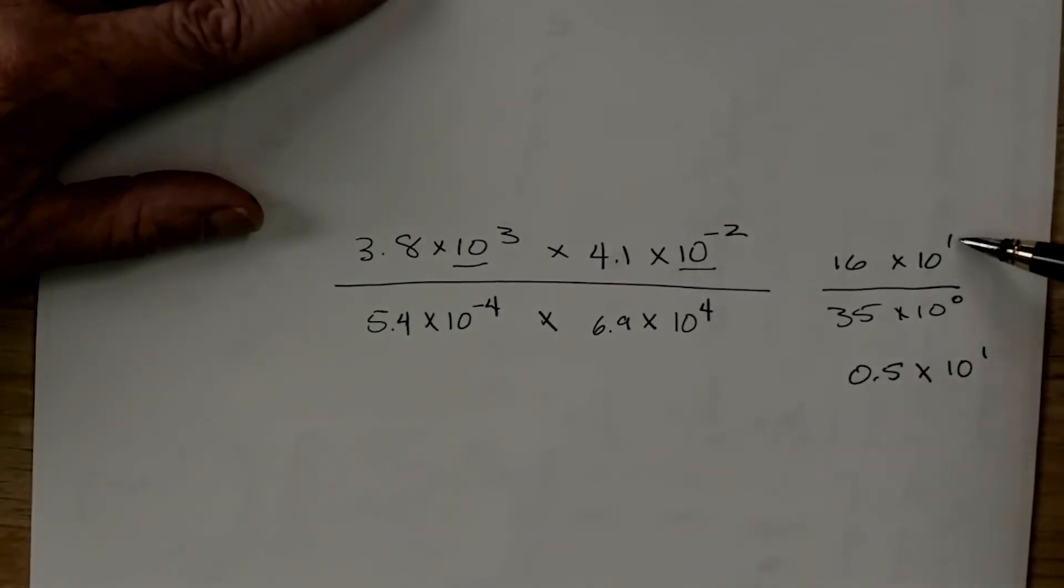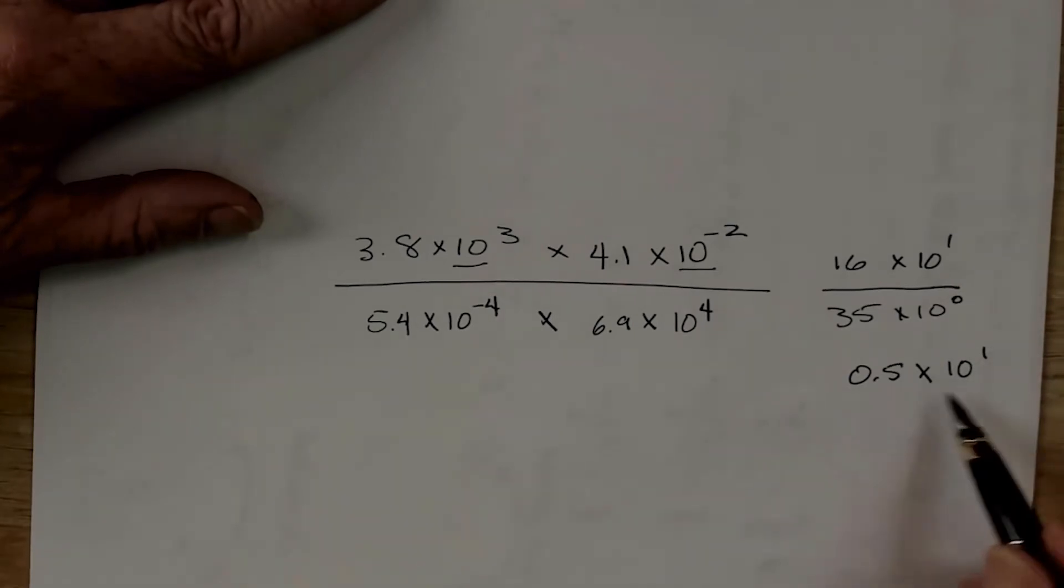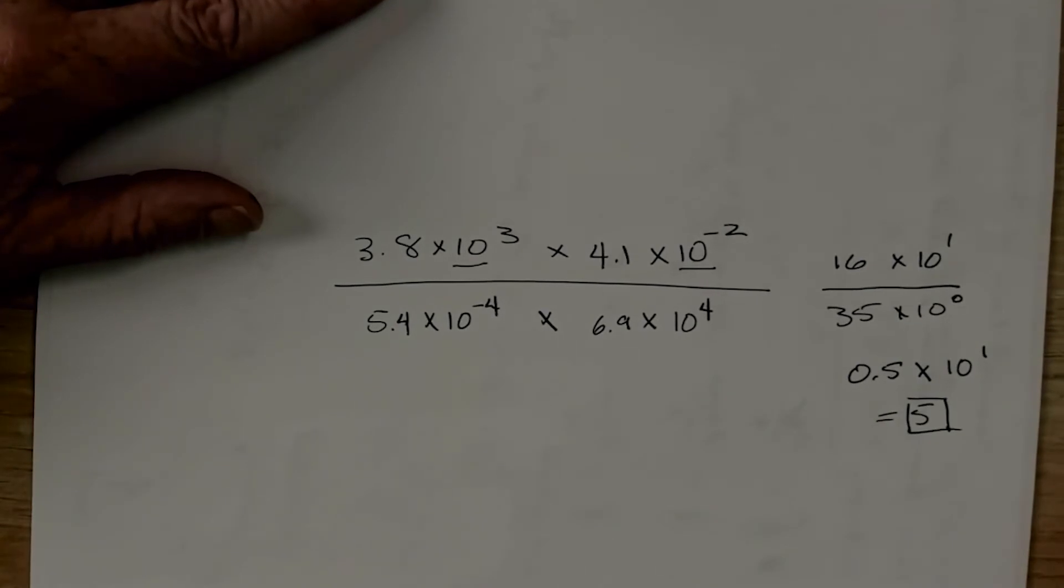Because what we're going to do, since we're dividing here, we're going to have 1 minus 0 is 1. What is 0.5 times 10 to the 1? So, it's going to be somewhere in the vicinity of 5. Now, let's go ahead and do this on the slide rule and see what we can come up with.